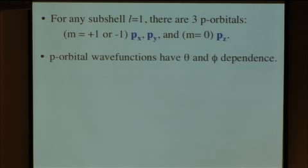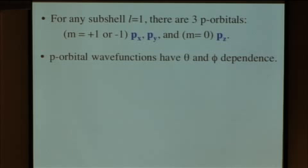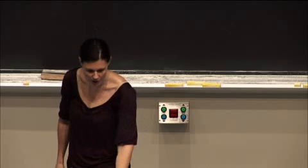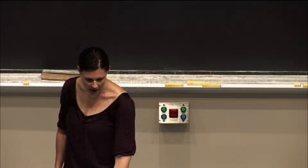The significant difference between s orbitals and p orbitals — arising from the fact that we do have angular momentum in the p orbitals — is that p orbital wave functions do in fact have theta and phi dependence. They have an angular dependence.